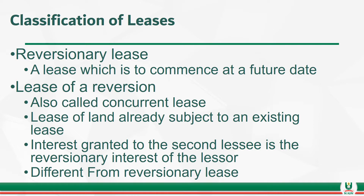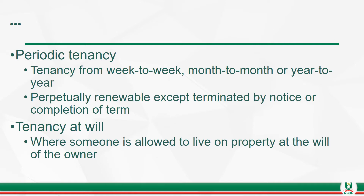Then you have the lease of a reversion. Please note it is different from a reversionary lease. Lease of reversion is also called a concurrent lease. It is the lease of a land that is already subject to an existing lease, but the interest that is granted is the reversionary interest that the lessor has. The second lease takes the reversionary interest off the lessor. And then you have the periodic tenancy, which is your normal tenancy from month to month, or year to year, or week to week.